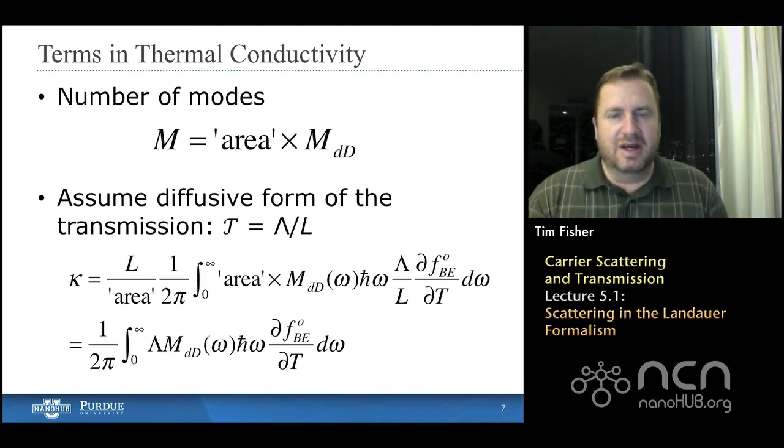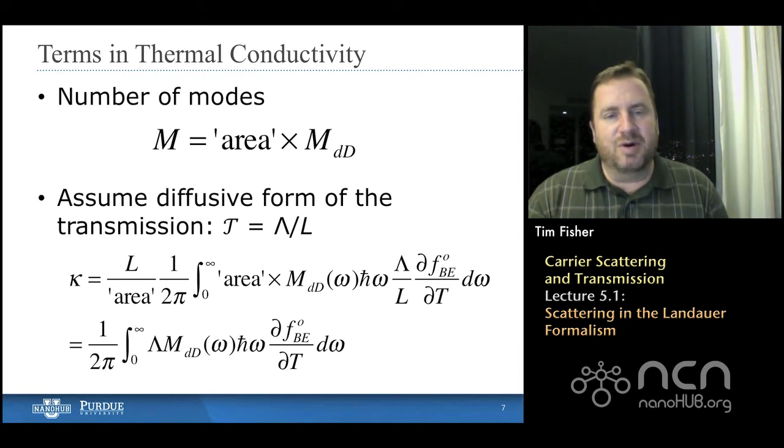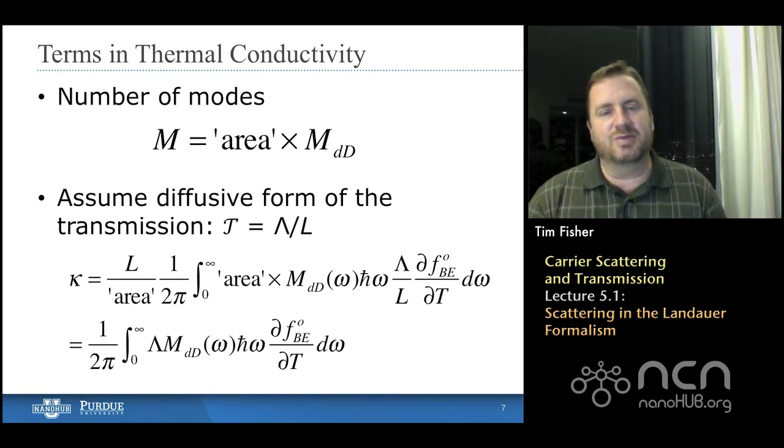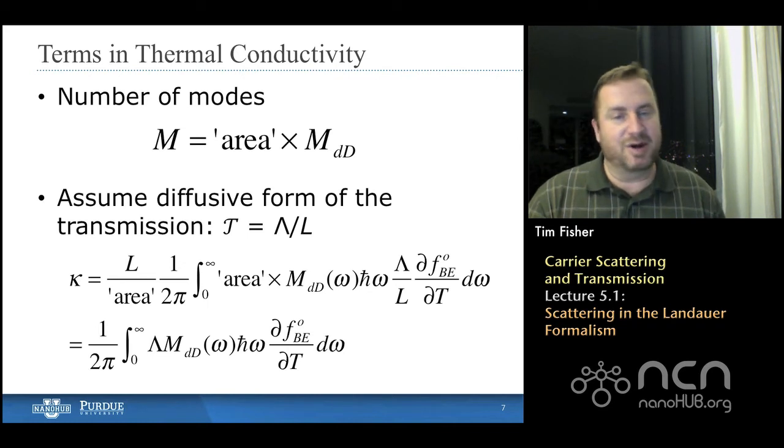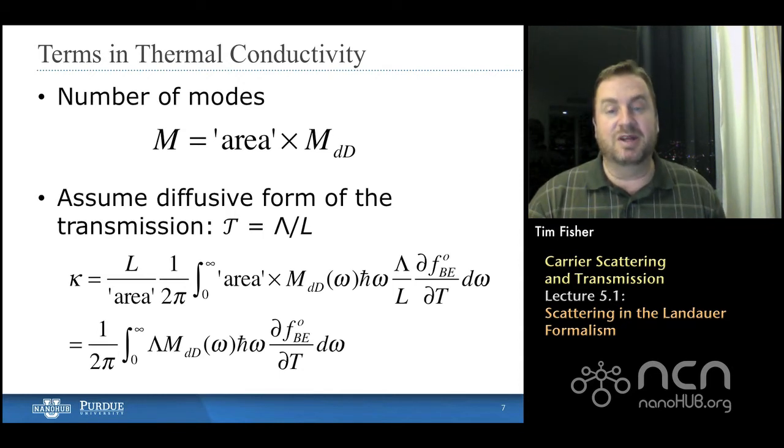If you'll recall back a couple chapters ago, or last chapter actually, the number of modes could be expressed in terms of an area, again, it's the same area that we had before, it depends on dimensionality, multiplied by a mode density. So m sub lowercase d, uppercase D, that means the lowercase d represents the dimensionality of the problem, one, two, or three.